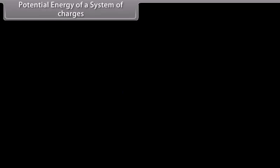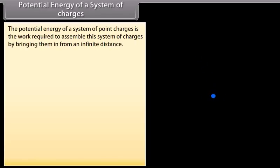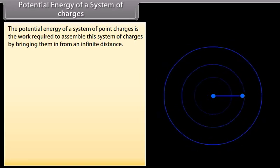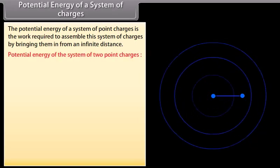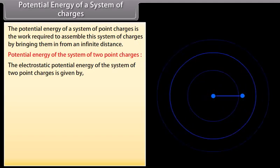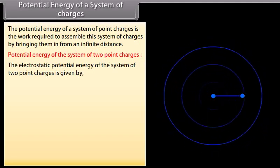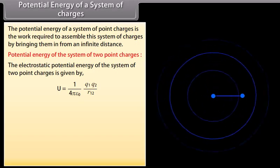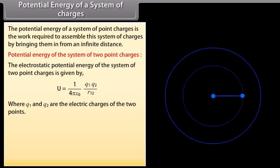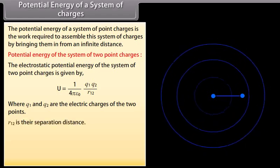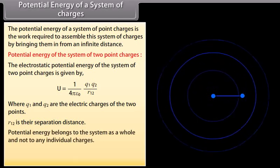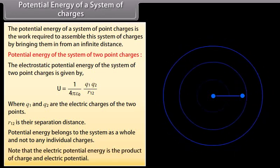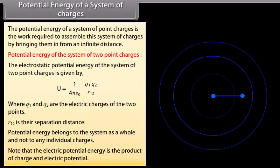Potential energy of a system of charges. The potential energy of a system of point charges is the work required to assemble this system by bringing them in from an infinite distance. The electrostatic potential energy of a system of two point charges is given by U equals 1 over 4π ε₀ multiplied by Q1 Q2 upon R12, where Q1 and Q2 are the electric charges and R12 is their separation distance. Potential energy belongs to the system as a whole, not to any individual charge. Note that electric potential energy is the product of charge and electric potential.